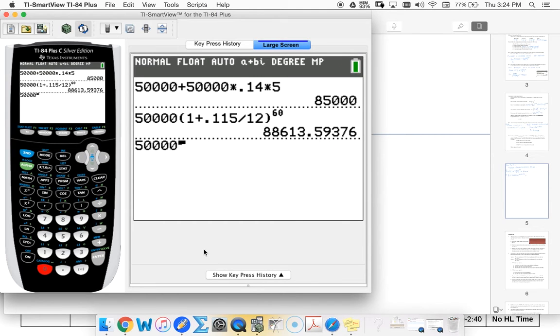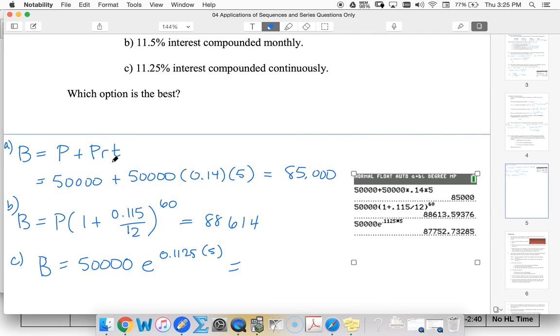$50,000 times e to the rt. Less than compounding monthly but greater than our simple interest. So we want to go with simple interest.